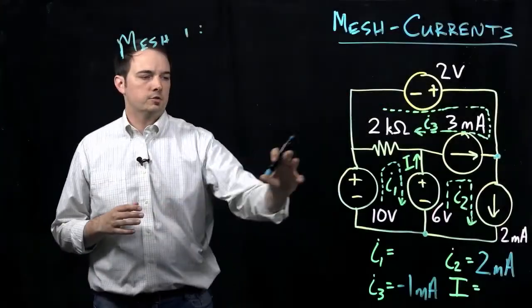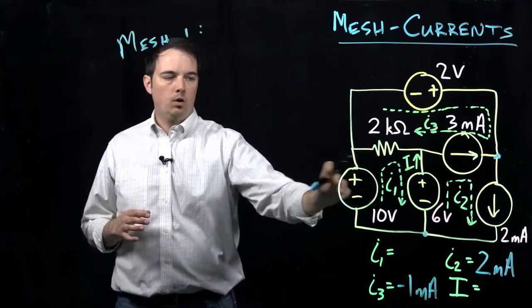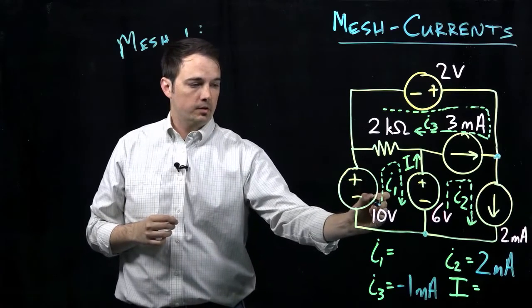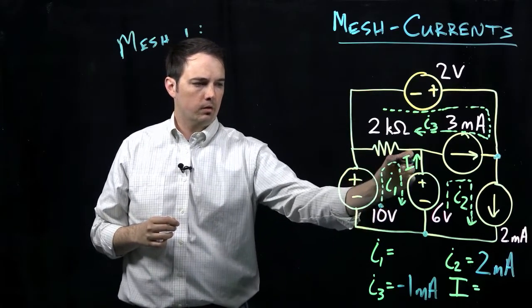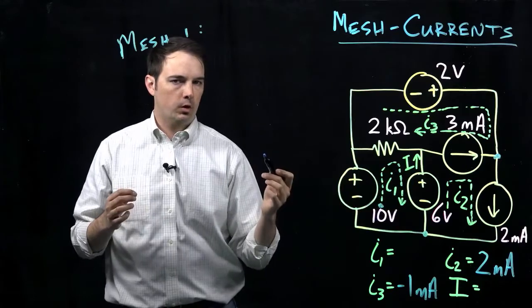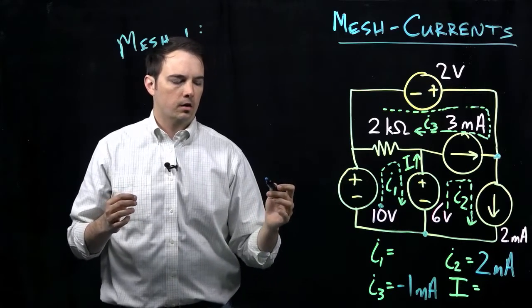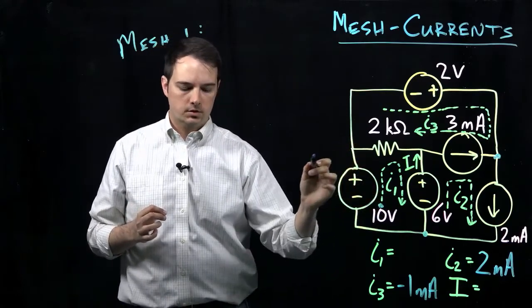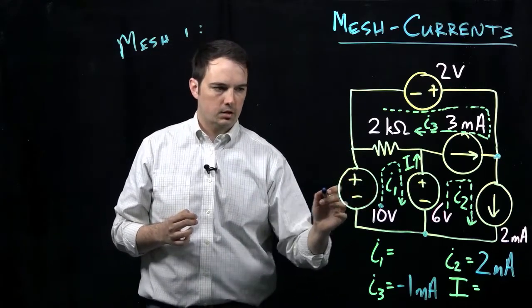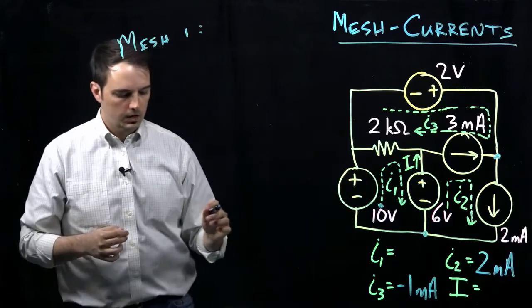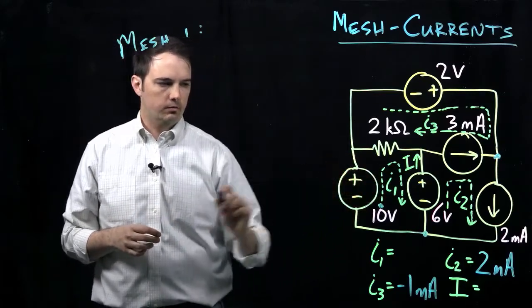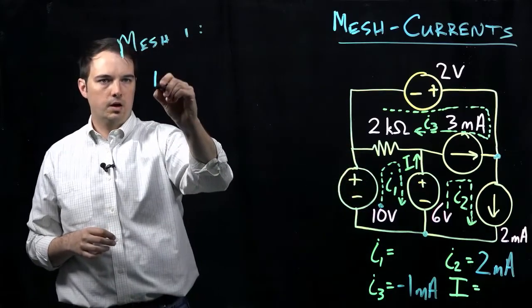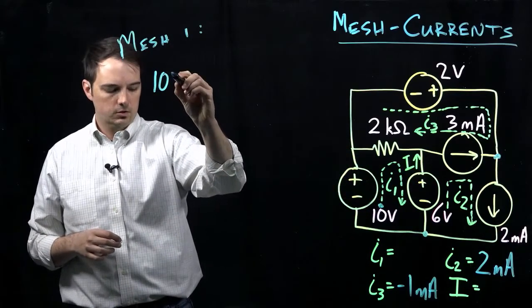Now in writing our equation for mesh I1, I'm going to start maybe down in this bottom left corner and we'll work our way around. The mesh current equations that we're writing are similar to a KVL loop equation, so we're looking at all the voltages that we come across. First we see this 10 volt source, which is a voltage rise. I'm going to indicate a voltage rise as a positive quantity, so that will be our 10 volts.